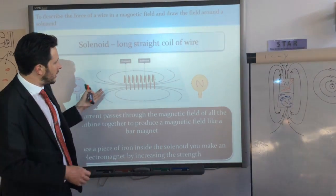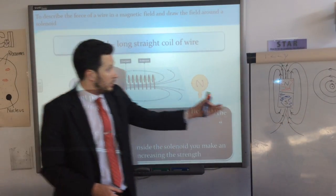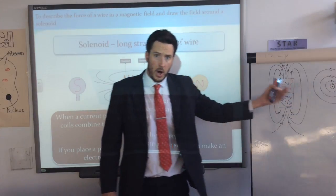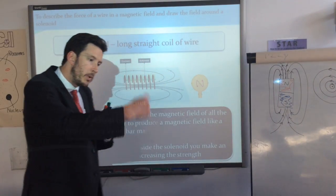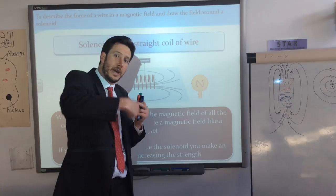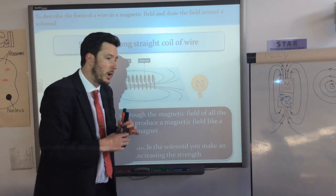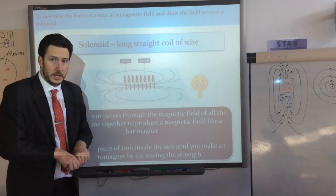So if we take a wire — passing a current through it generates a magnetic field — and we coil that wire up into a long straight coil, we call that a solenoid.